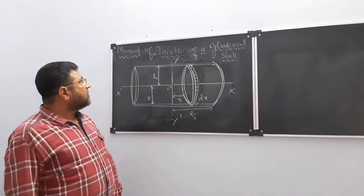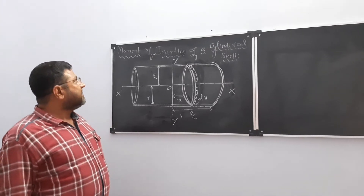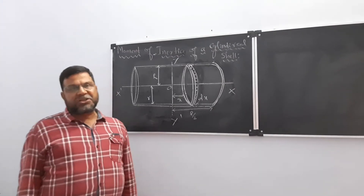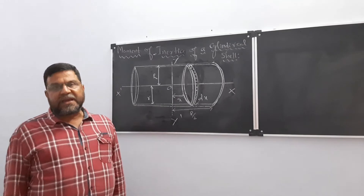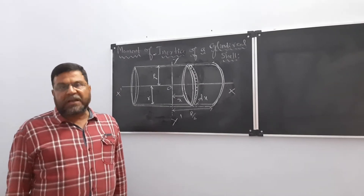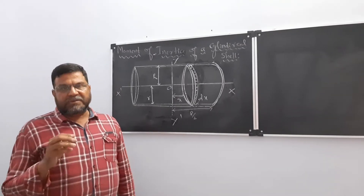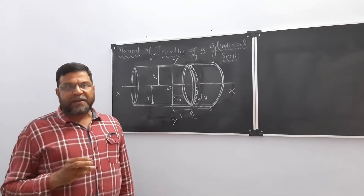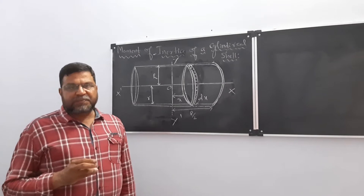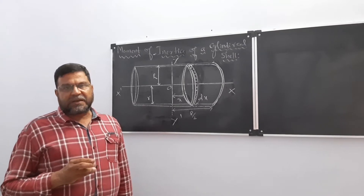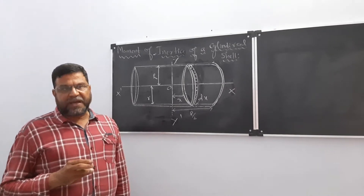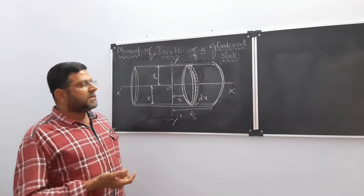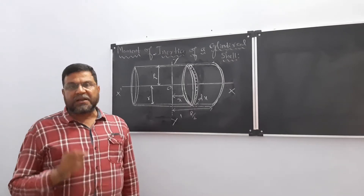Good morning children. Today we are going to see the determination of moment of inertia of a cylindrical shell. We have seen first the solid sphere, then the spherical shell, then the solid cylinder, and now we are going to see the cylindrical shell.